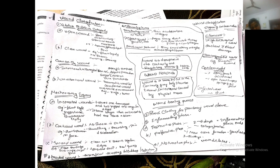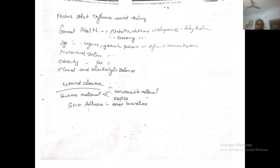Wound healing process: first, blood clotting provides wound closure. Then the inflammatory phase occurs, followed by the destructive phase lasting 2 to 5 days where collagen formation slightly begins. Proliferative phase: new tissue — granulation tissue — forms and spreads within 3 to 24 days. Maturation phase: the wound gets closed and tissue returns to normal. These are the five stages of wound healing.